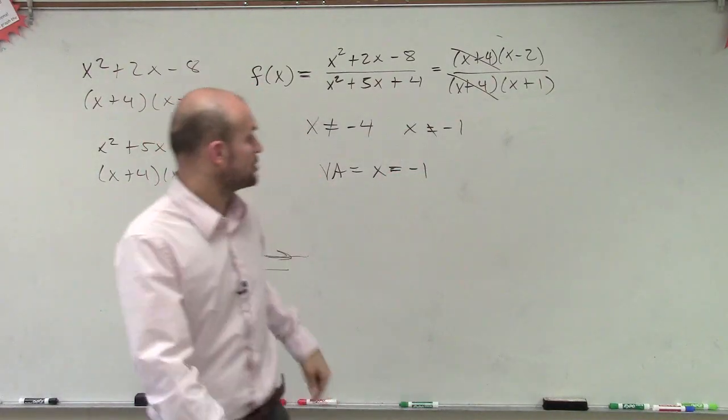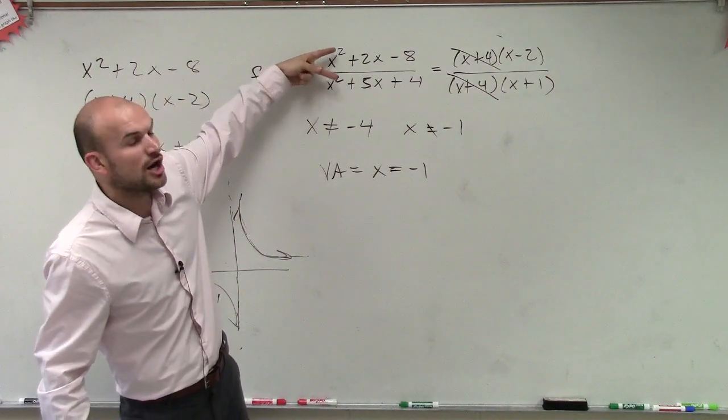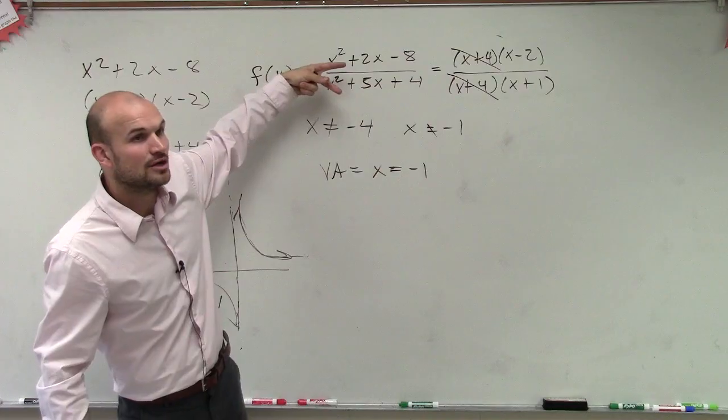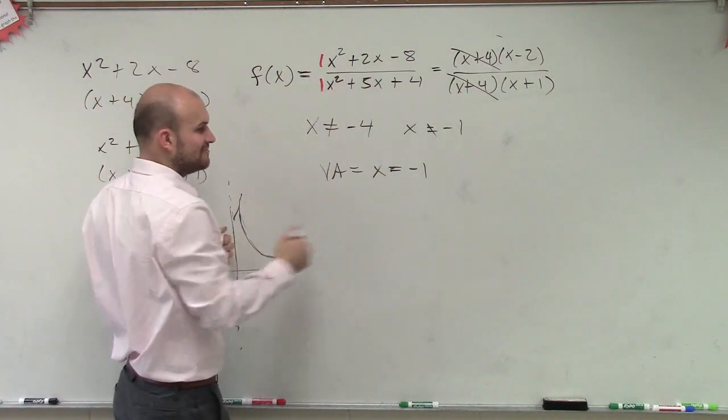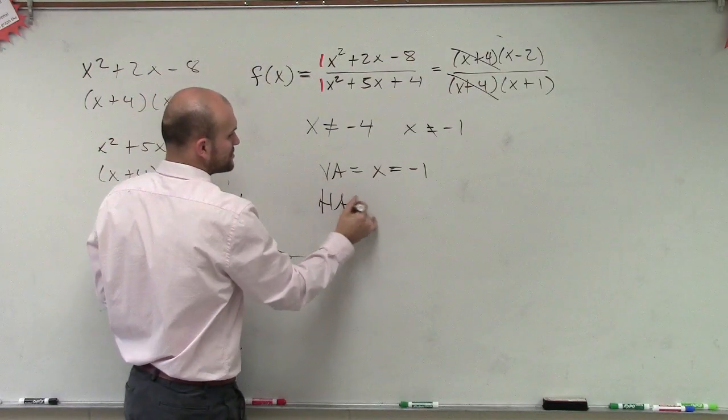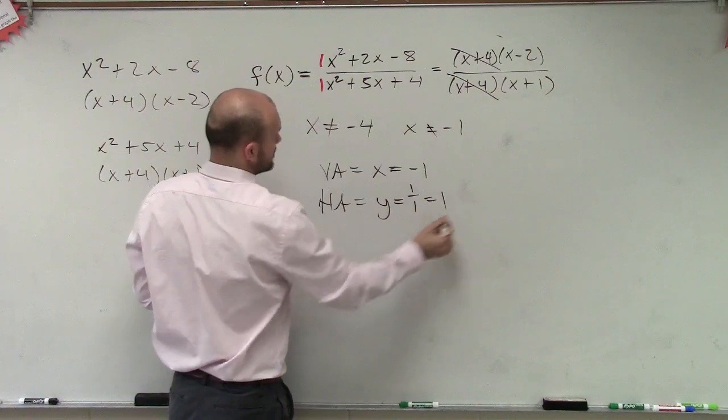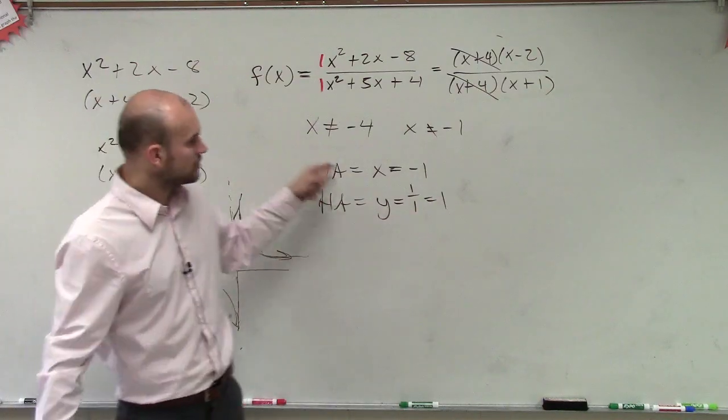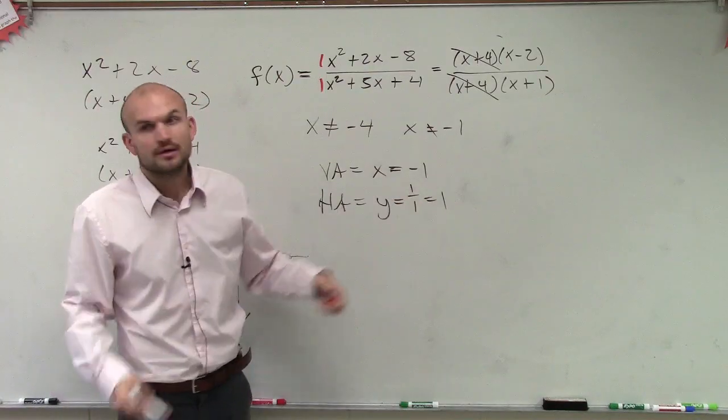Your horizontal asymptote, we look at our degrees. When our degrees are exactly the same, we take our leading coefficients, which is 1 over 1, and we divide them. So our horizontal asymptote is y equals 1 over 1, which just equals 1. So we have a vertical asymptote at x equals negative 1, a horizontal asymptote at 1.